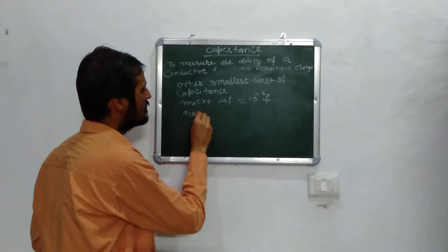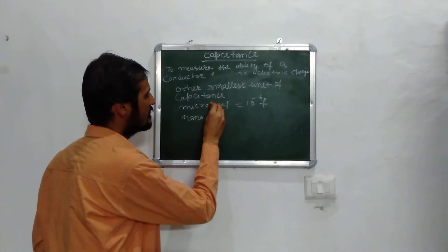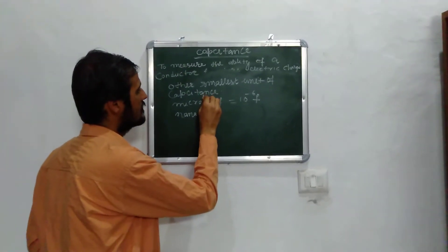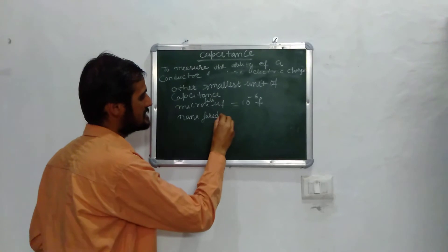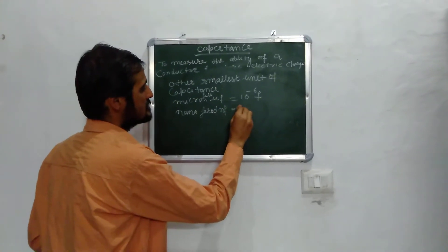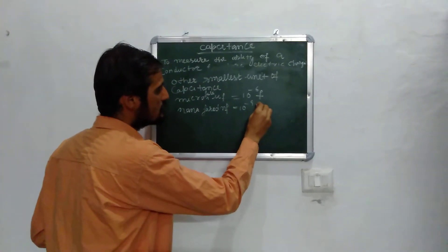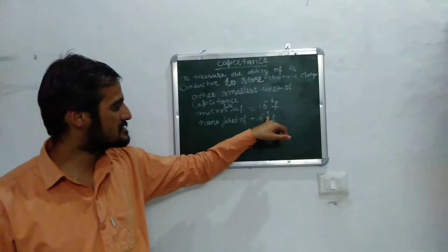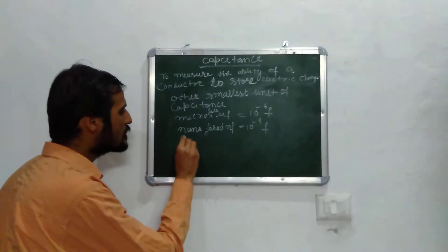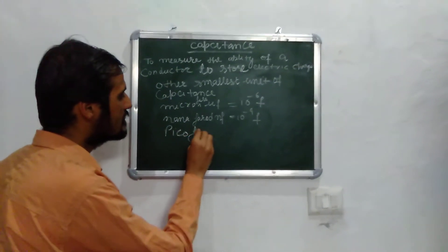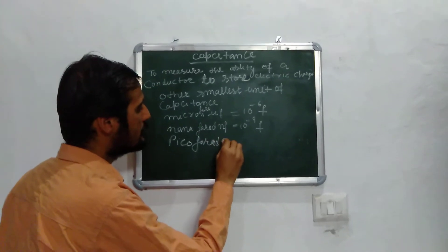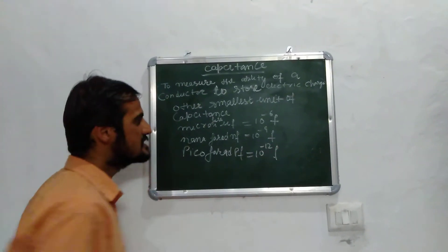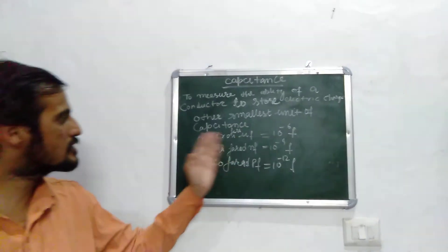Other sub-units of capacitance: nanofarad (NF) equals 10 raised to the power minus 9 farad, and picofarad (PF) equals 10 raised to the power minus 12 farad. These are the smallest units of capacitance.